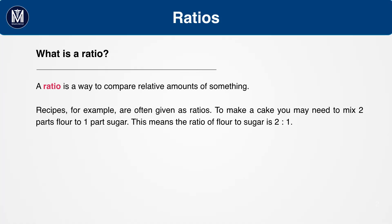Often you'll get questions involving ratios and you'll need to set up and use ratios to answer a problem. A ratio helps us to compare the amounts of things. For example, to make a cake you may need to mix two parts of flour to one part of sugar. This means that the ratio of flour to sugar is 2 to 1.